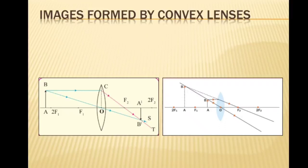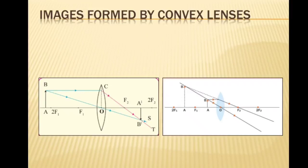AB is the object placed beyond 2F1. The first ray is parallel to the principal axis and after refraction passes through principal focus F2 on the right-hand side of the lens. The second ray passes through the optical center without deviation. Here we are using the first rule and the third rule. The image obtained is A'B' — it is real, inverted, and smaller than the object.